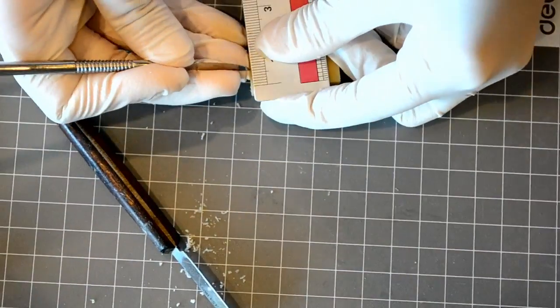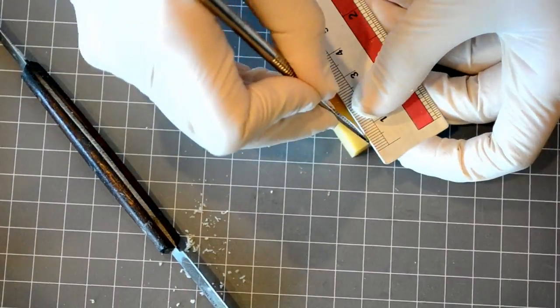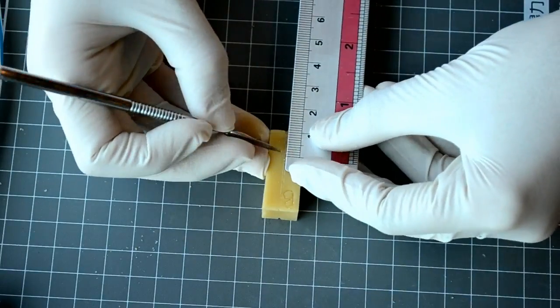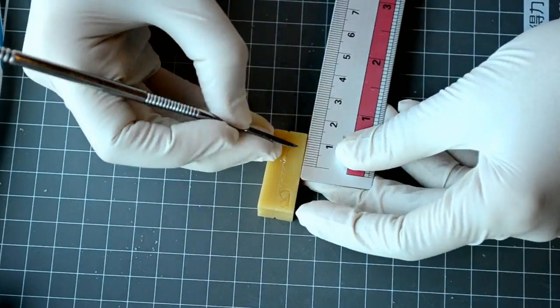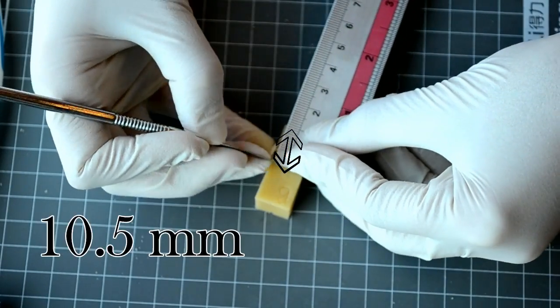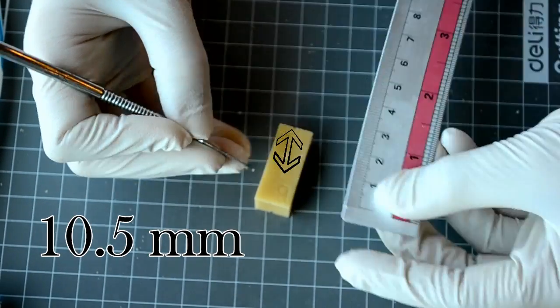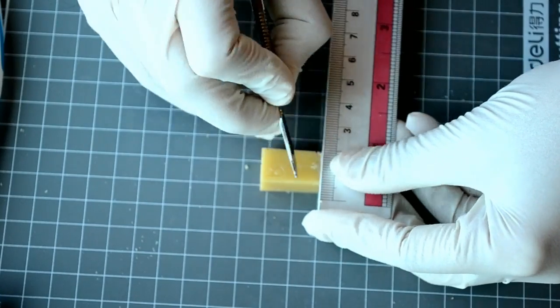Now you can start placing your measurements on each aspect using the electron carver and ruler. Let's start with the buccal aspect. Using the incisal edge of the wax block as reference, measure 10.5 mm at the center of the buccal aspect to mark the length of the crown.